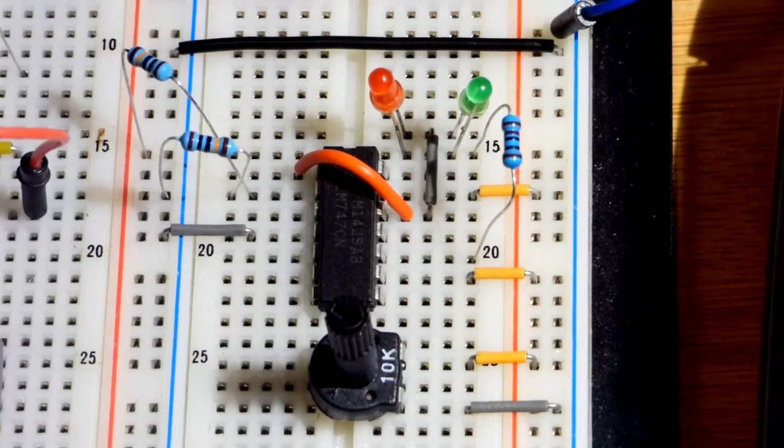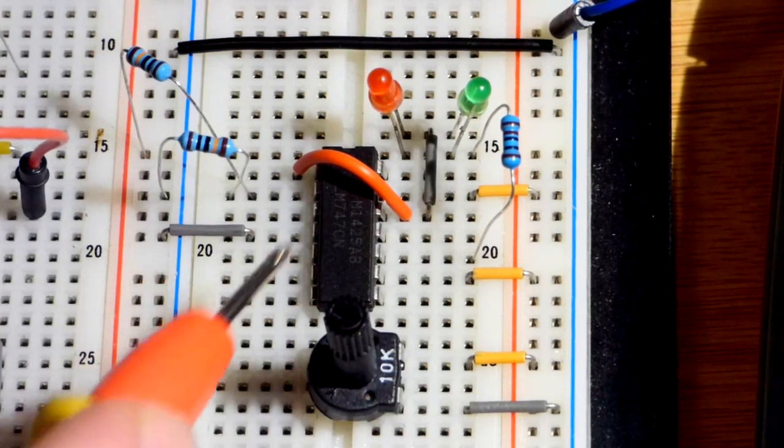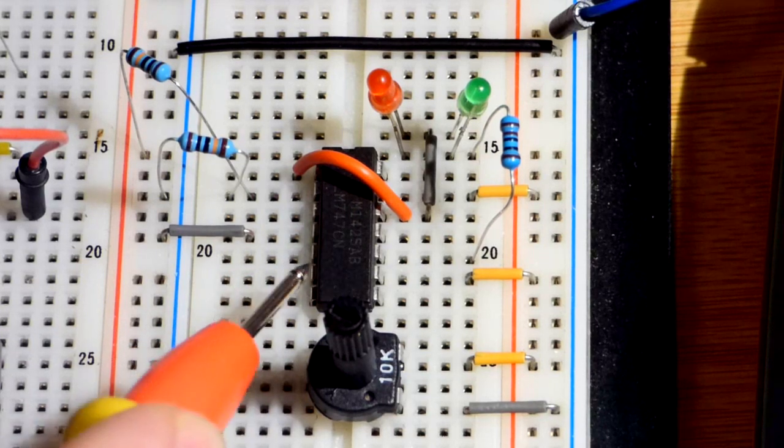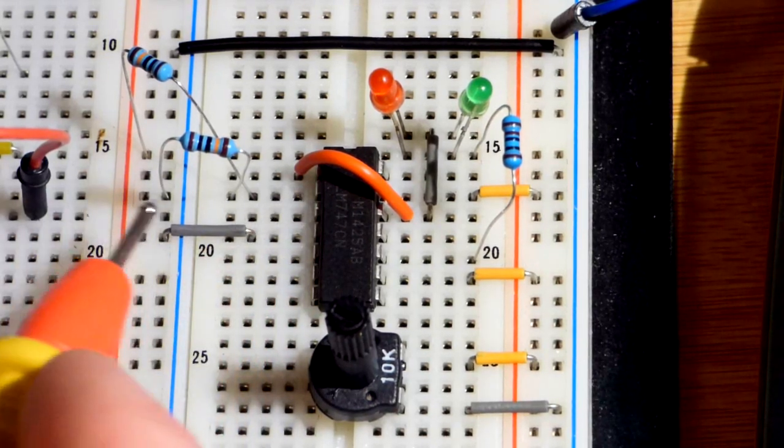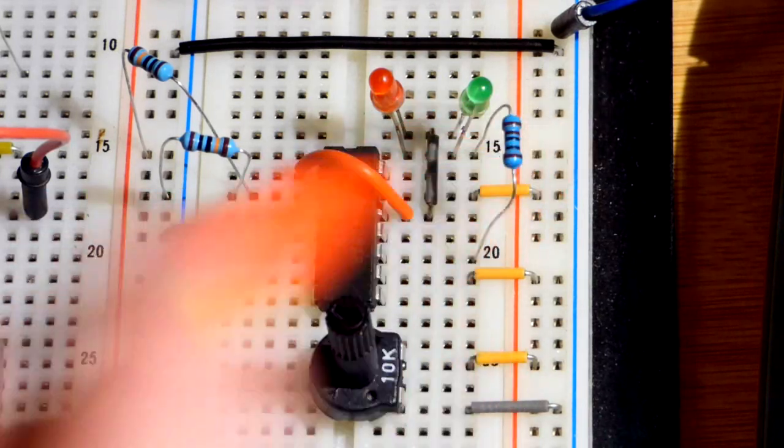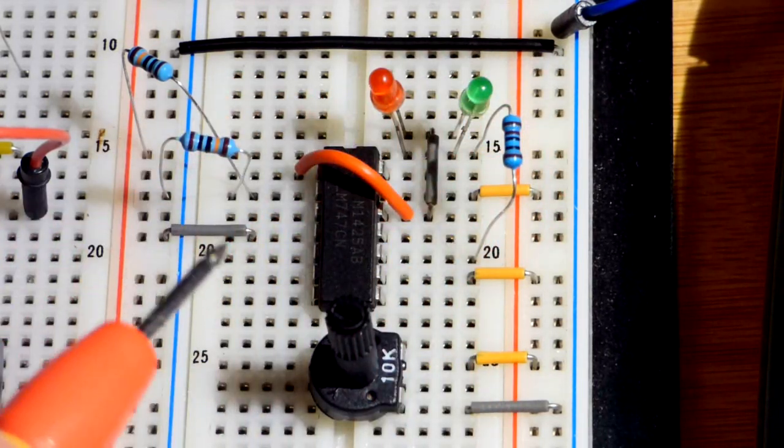So now in this video we're going to make a simple circuit called a comparator with the 747 op amp. This is the LM747 and you can see we're going to have an 18 volt power supply connected to this when I turn the power on.